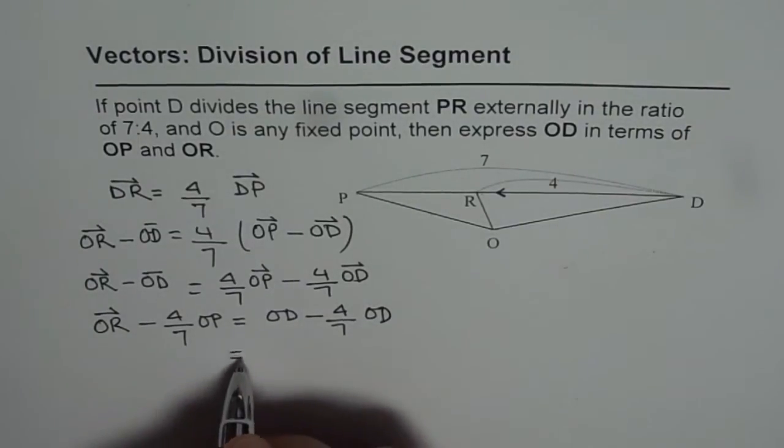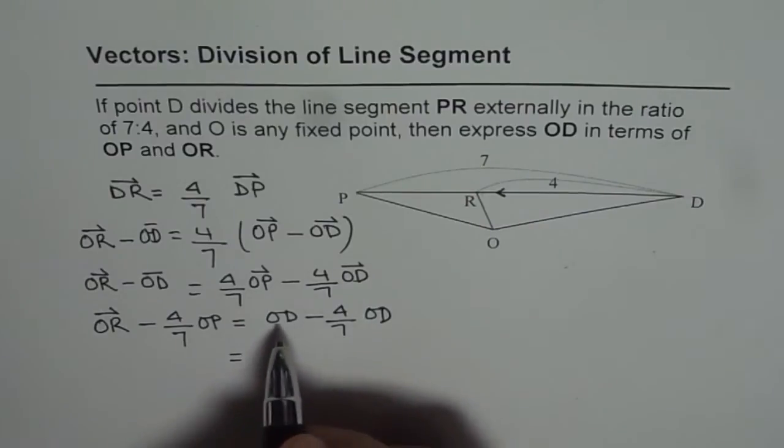Now, that is, 7 minus 4 is 3, so it is 3 over 7 OD. And here we have OR minus 4 over 7 OP.